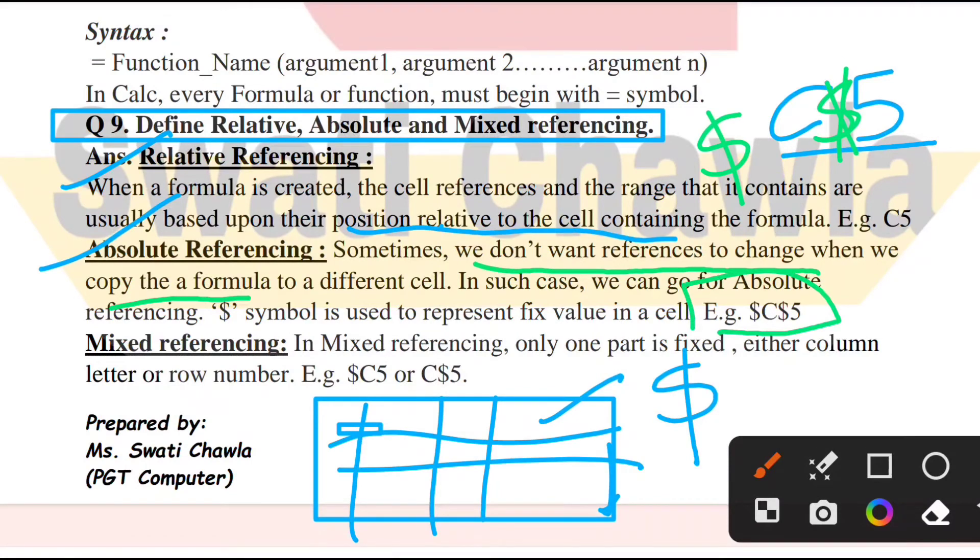Next is mixed referencing. In mixed, what happens is it comes on one part only. Either fix the row or fix the column, it's your choice. Whichever you want to fix, I put dollar symbol before one. In mixed referencing, only one part is fixed, either column or row.